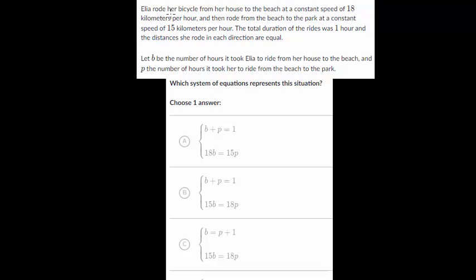In this problem, Elia rode her bicycle from her house to the beach at a constant speed of 18 kilometers per hour. I'll usually highlight numerical information as I go along the way. And then rode from the beach to the park at a constant speed of 15 kilometers per hour.